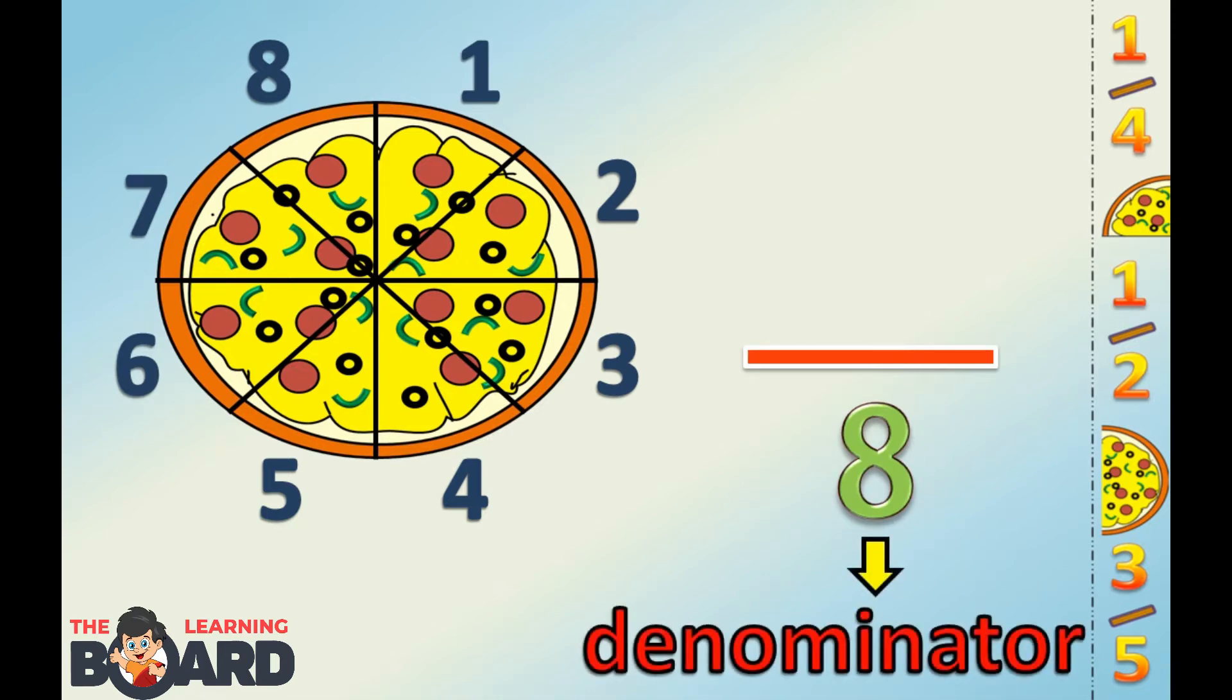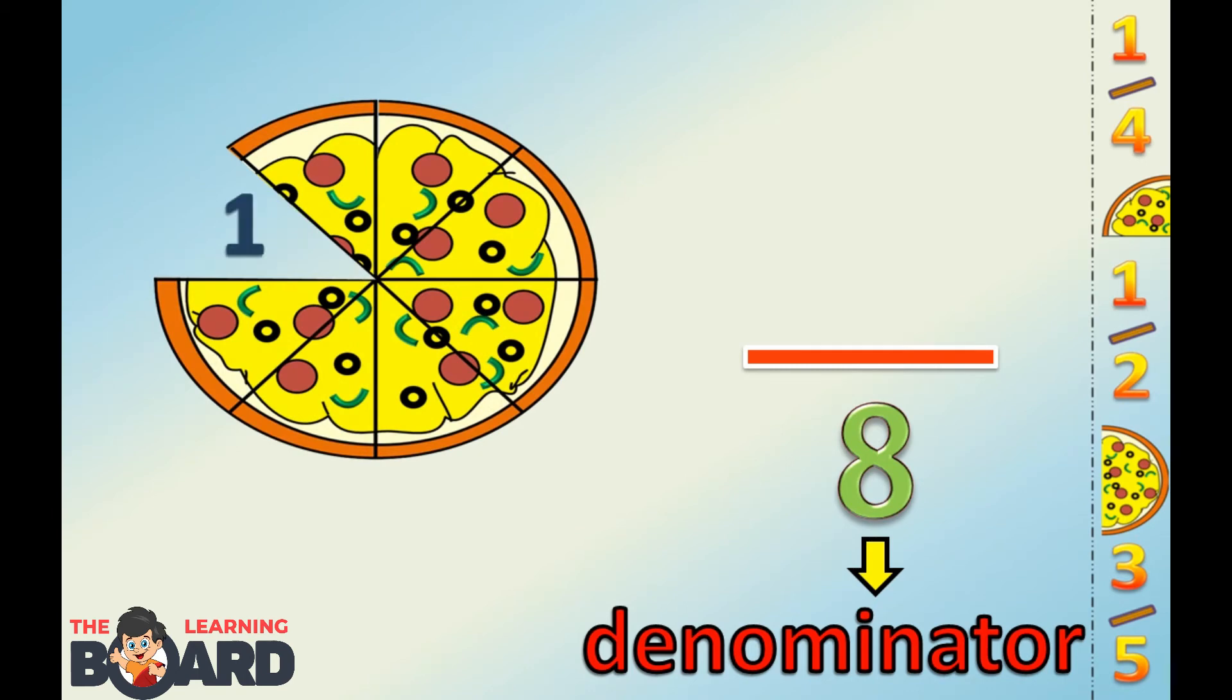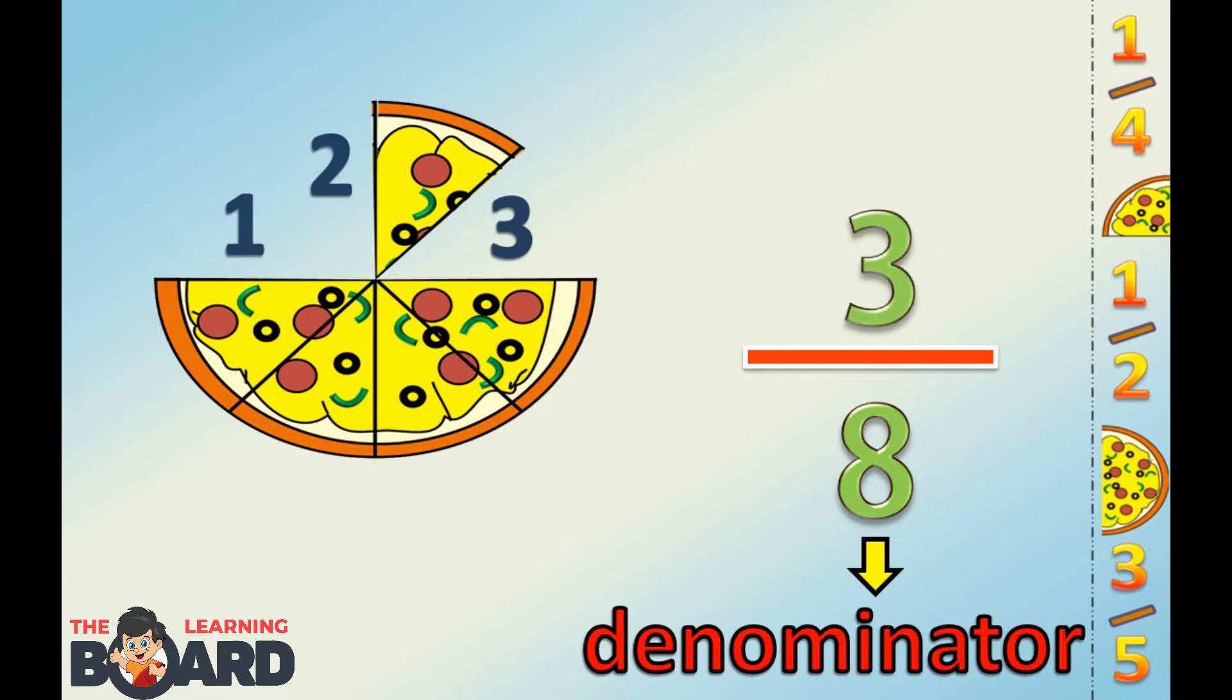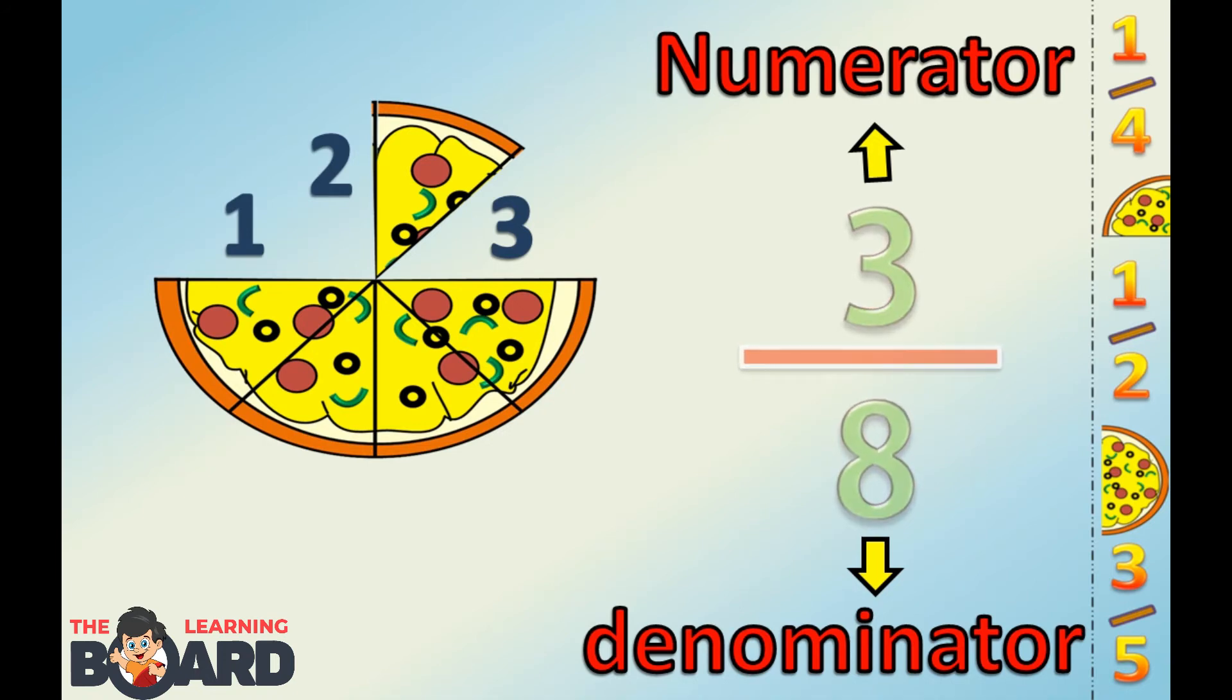This is called a denominator. It tells you the total number of parts you have of a whole. You ate three slices of the pizza. The top number will be three. This is called a numerator. It represents the specific part of a whole. Now you know, you ate three eighths of the pizza.